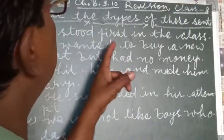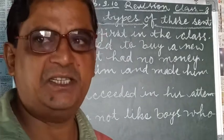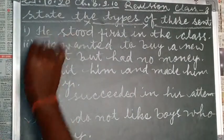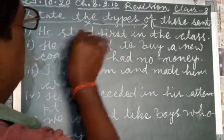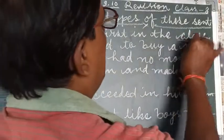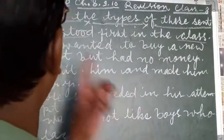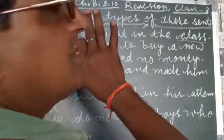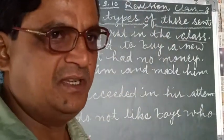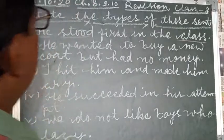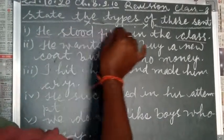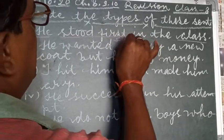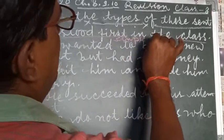Number one is: he stood first in the class. You are looking in this sentence there is one subject, one verb, and one object, and one finite verb. That is why this is a simple sentence. What do we say children? It is a simple sentence — S-I-M-P-L-E, simple sentence.